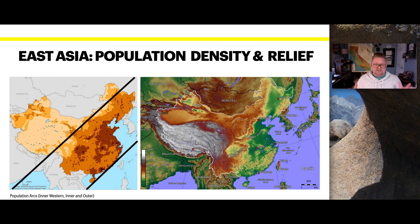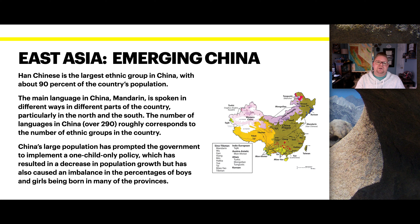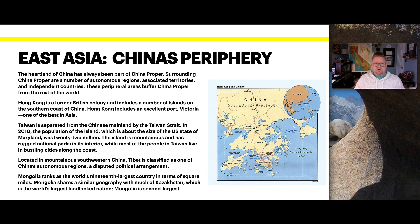The Han Chinese is the largest ethnic group in China, with about 90% of the country's population. The main language is Mandarin, spoken in different ways in different parts of the country, particularly in the north and the south. The number of languages in China goes over about 290 because of the variations in different linguistics, roughly corresponding to the number of ethnic groups — much like how people in Kansas, Texas, Tennessee, or California might speak a different version of English. China's large population prompted the government to implement a one-child-only policy, which resulted in a decrease in population growth but also caused an imbalance in the percentage of boys and girls being born, which is related to why India is now surpassing China in population.